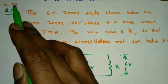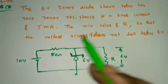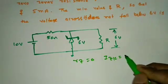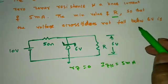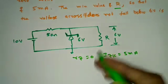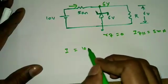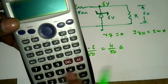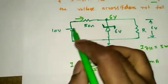Question 3 is from GATE 1992. A 6 V Zener diode has zero Zener resistance (Rz = 0) and a knee current Izk = 5 mA. We need the minimum value of R such that the voltage across the load does not fall below 6 V. With 6 V across the load, the source current I = (10 − 6) / 50 = 4/50 = 80 mA.